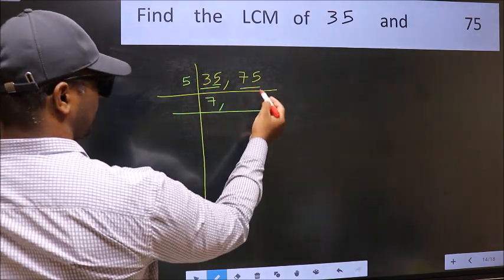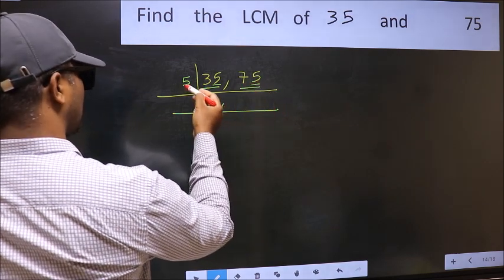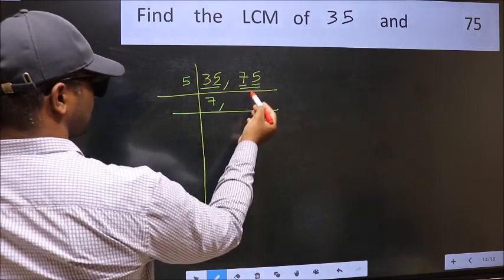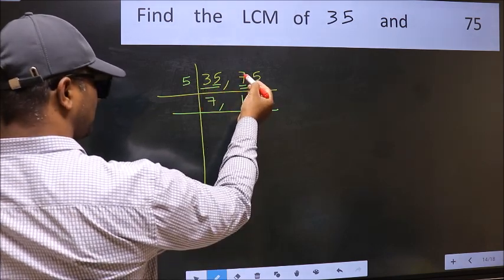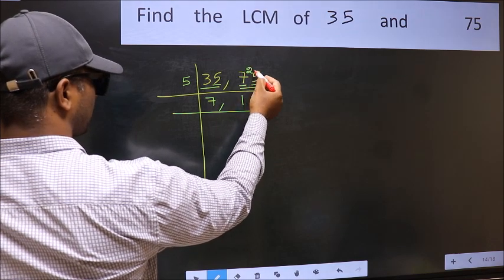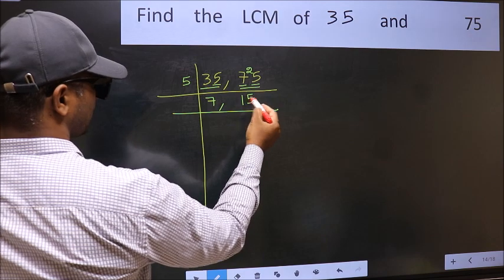The other number 75. Last digit 5, so this is divisible by 5. First number 7. A number close to 7 in 5 table is 5 times 1 is 5. 7 minus 5 is 2. 2 carried forward 25. When do we get 25 in 5 table? 5 times 5 is 25.